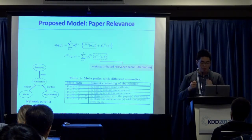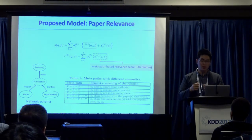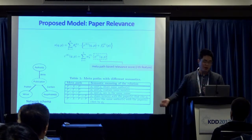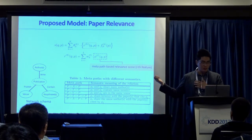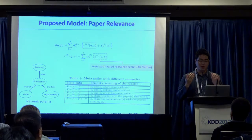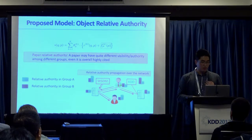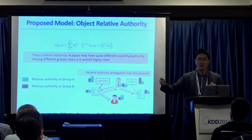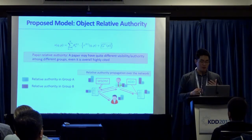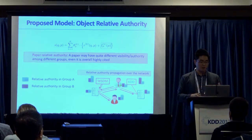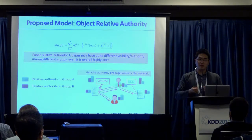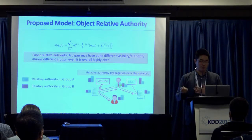You learn weights over these different meta paths, and together they define the relevance between paper q and paper p. The authority part is learned by doing label propagation on the constructed graph, propagating between venues, authors, papers, and keywords. Since different groups have different weights on nodes, the authority scores for different groups end up being different — so the LDA paper's authority in one topical group may be higher than in another group focused on frequent pattern mining.